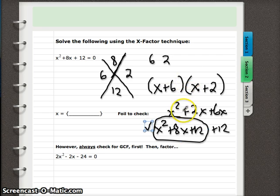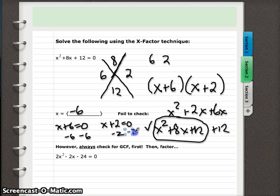We factored it correctly, so we must be on the right track here. Set each of these parentheses equal to 0. X plus 6 equals 0. Solve for x. Subtract 6 from both sides. You get x is negative 6. Set the other set of parentheses equal to 0. So subtract 2 from both sides. x is also negative 2.